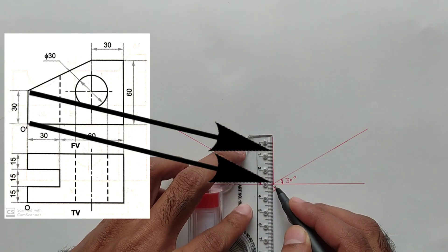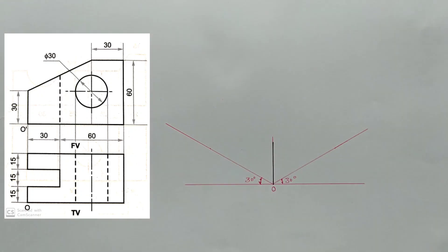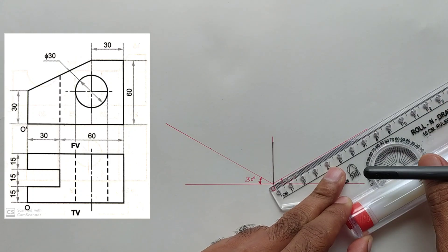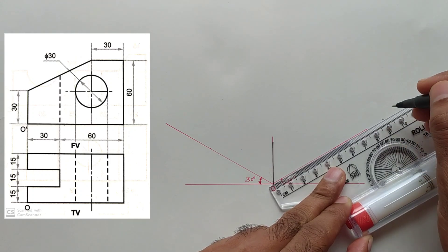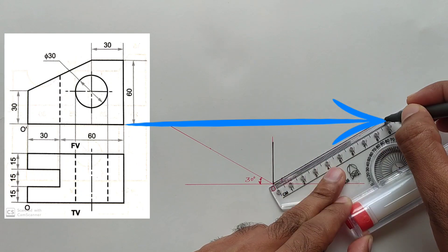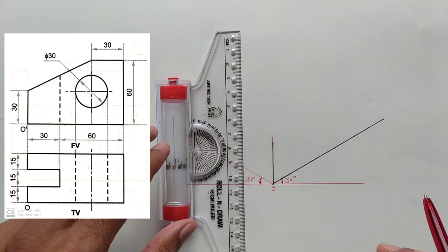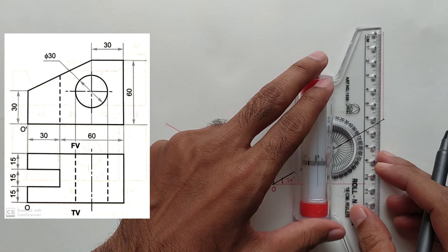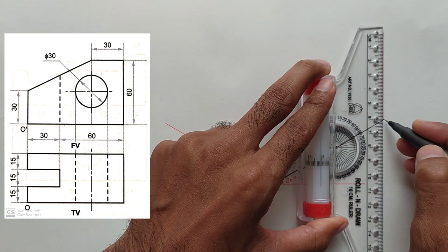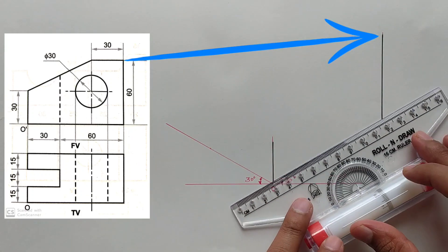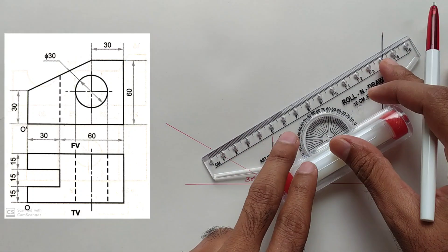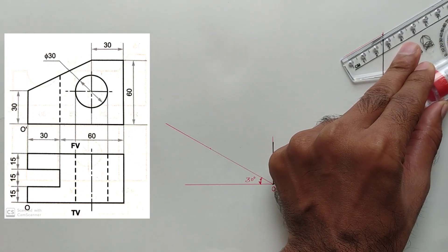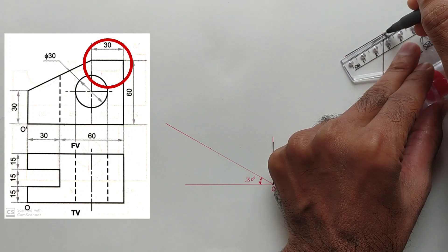Now we will draw this line — the height is 30 mm from the origin point. On the x-axis, mark the length of the object which is 90 millimeters and draw a vertical line from this point. Mark a point at 60 mm distance on this line and make it dark. Set the scale parallel to this line and draw a small line from this point, then draw a dark line at 30 mm distance.